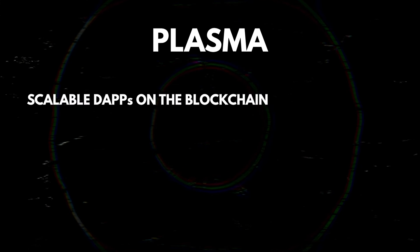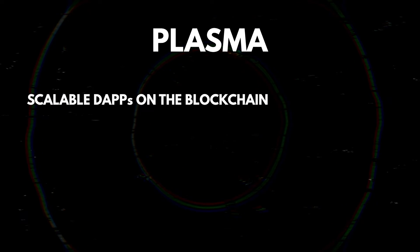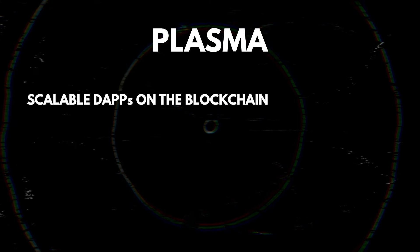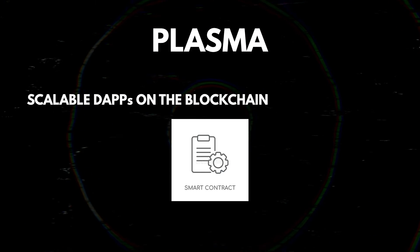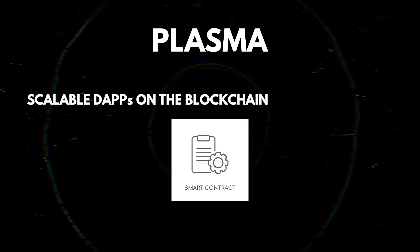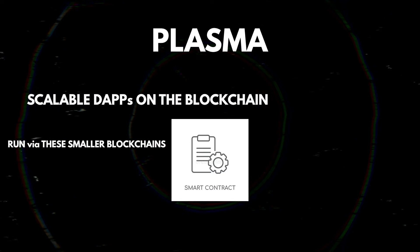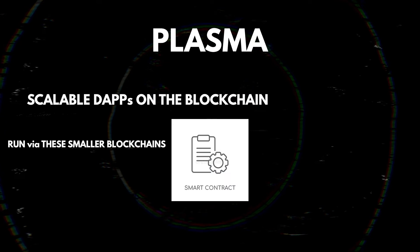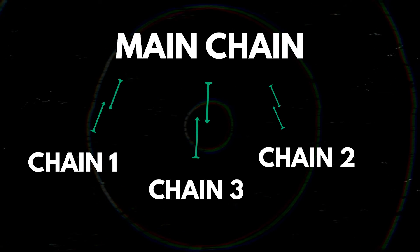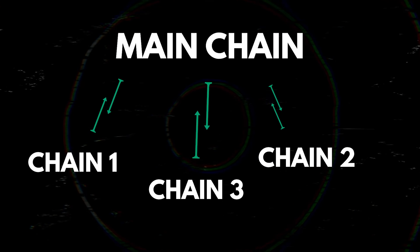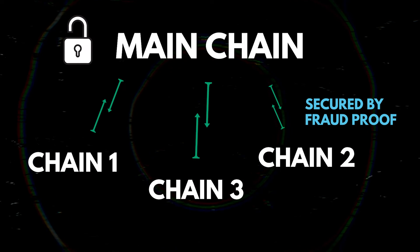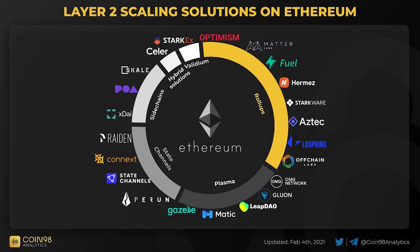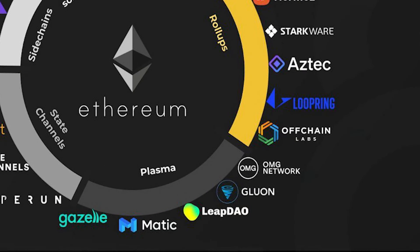Lastly, we have Plasma. Plasma is a framework for creating scalable DApps on the blockchain. They can create smaller blockchains connected to the main blockchain via a smart contract. DApps then run via these smaller mini-blockchains, greatly lowering the strain on the main network. The communication between these mini-blockchains and the main chain is secured by fraud proofs, with the main chain responsible for securing the network and punishing malicious actors. Some projects using Plasma: OMG, Raiden Network, and Loom Network.